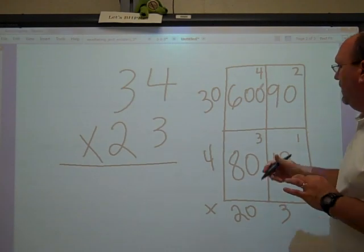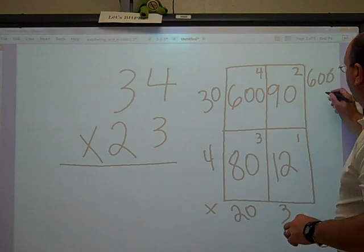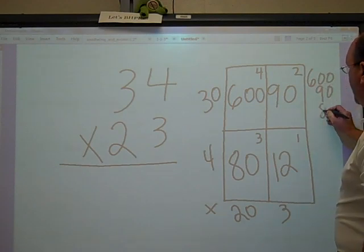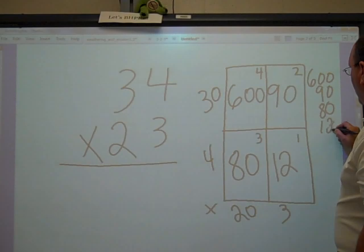Here's how it goes very quickly: 600, 90, 80, and 12. Add it together.